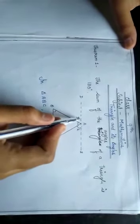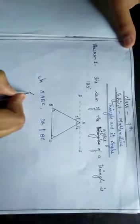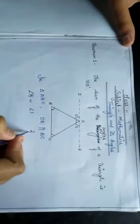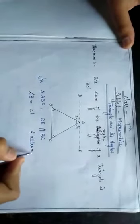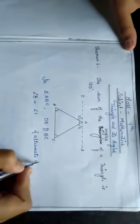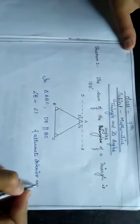Then, this angle 1 is equal to angle B. Angle B is equal to angle 1 because these are the alternate interior angle.